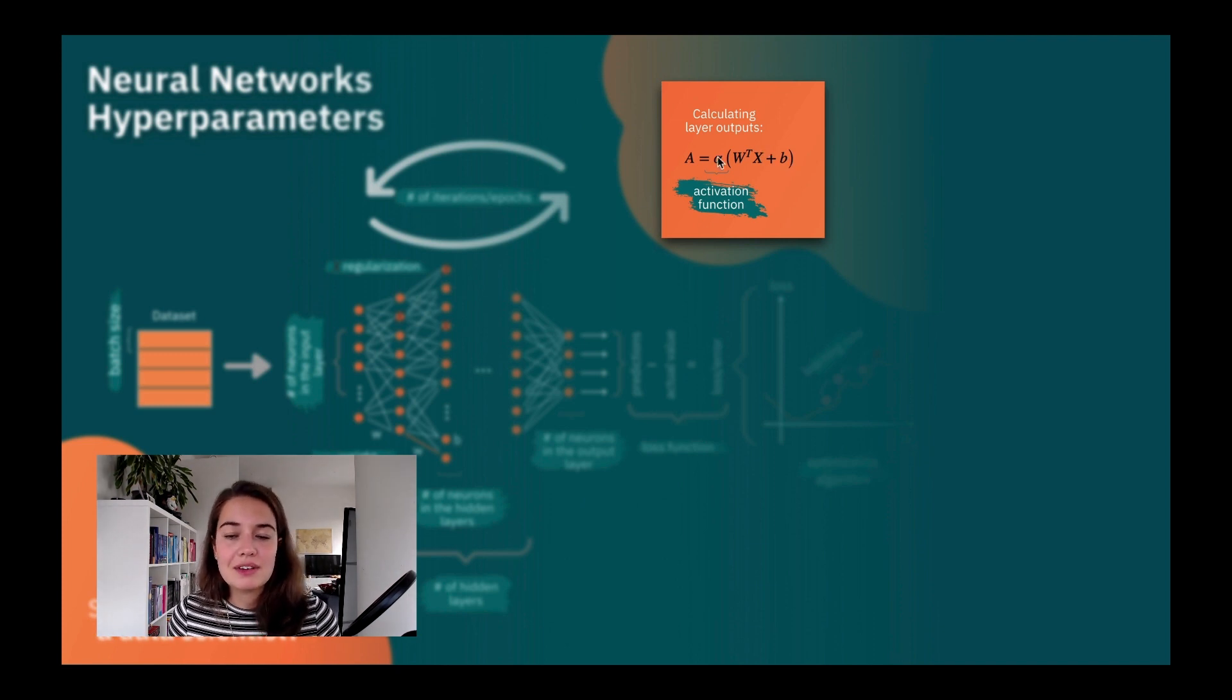In this case, an activation function is something that we put all of these things in so that it gives us a transformation, and that makes our output, which is the capital A, a vector of all the outputs of the neurons of a certain layer.